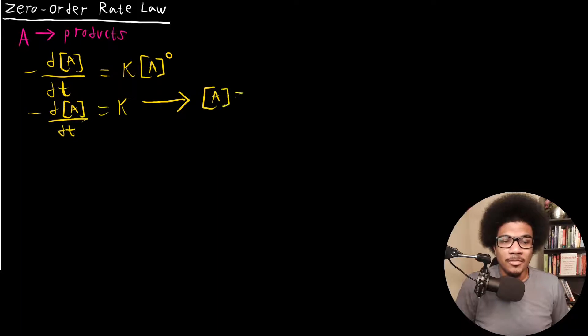You'll end up with the concentration of A being equal to negative KT plus the initial concentration of A. So this will be your differential rate law. This will be your integrated rate law.